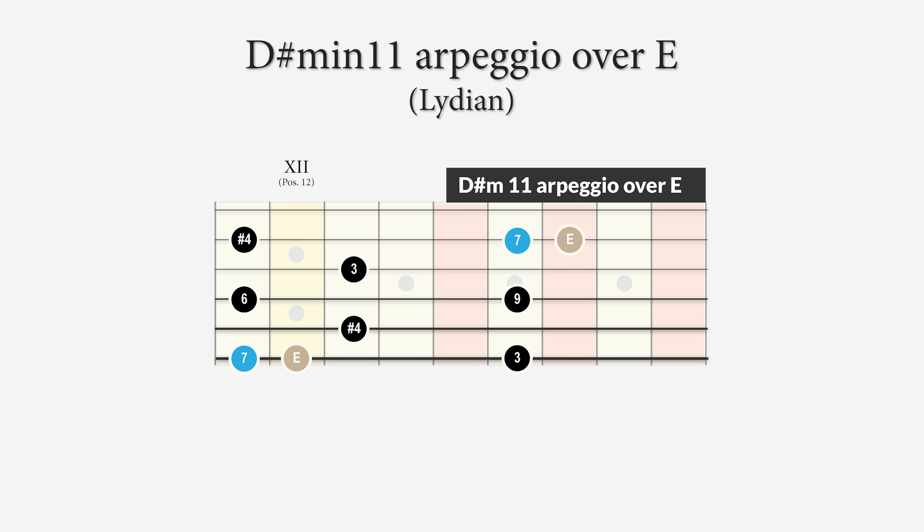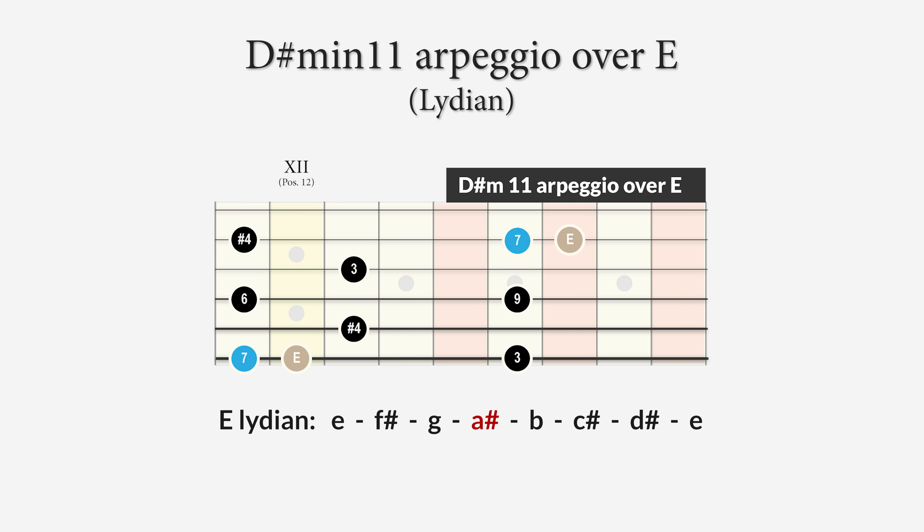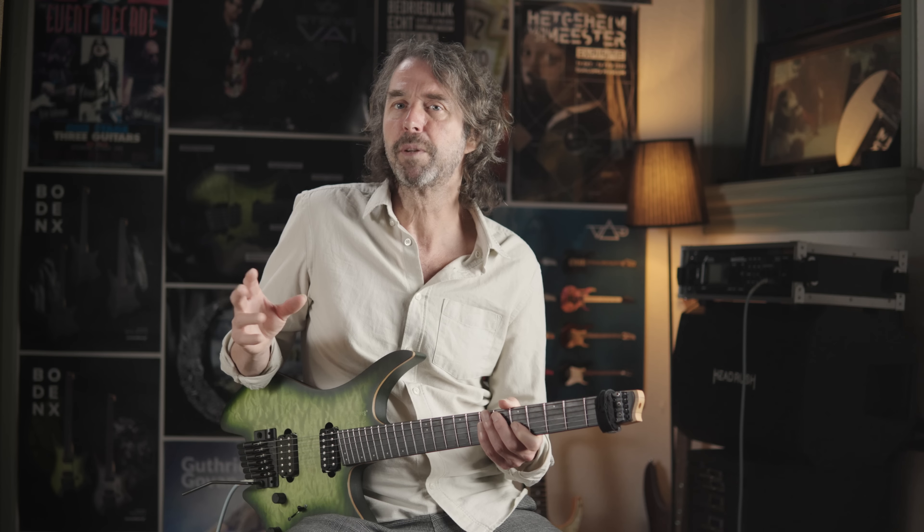The whole arpeggio can also be transposed to a semitone lower than the root of the major chord that you are playing over, to create a Lydian effect. By the way, a Lydian scale is a major scale with an augmented 4th degree — the A sharp in this case. It is in fact the brightest mode of the major scale.